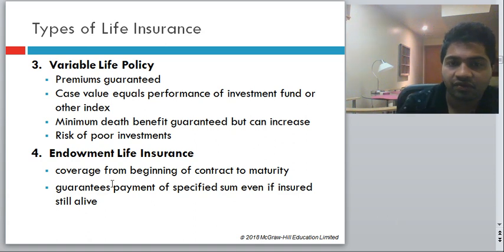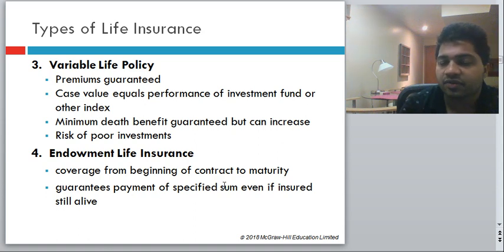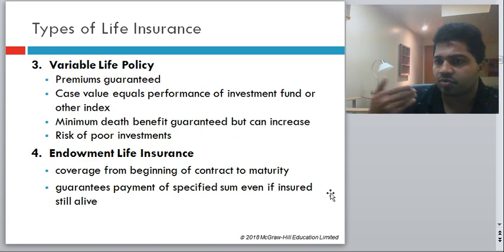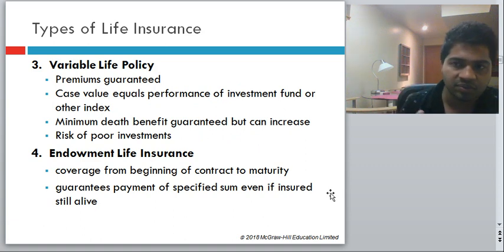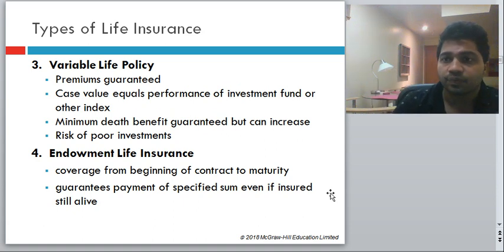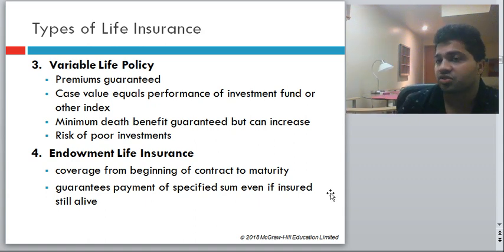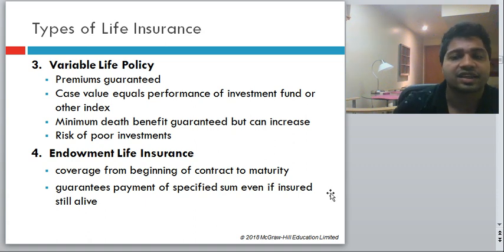Endowment life insurance provides coverage from the beginning of the contract to maturity and guarantees payment of a specified sum if you are still alive at the end of the term. It is similar to universal life: some part of the premium goes toward pure insurance and some part is invested. Upon the maturity date, you are paid the cash value of the policy, which depends on the investments made. In the event of death, you get the death benefits.